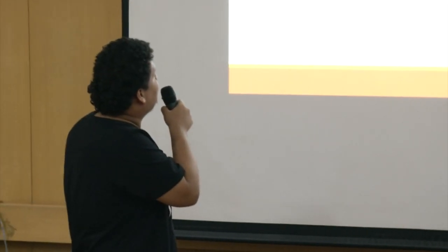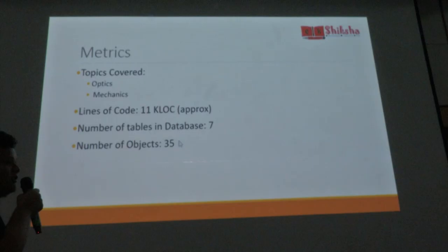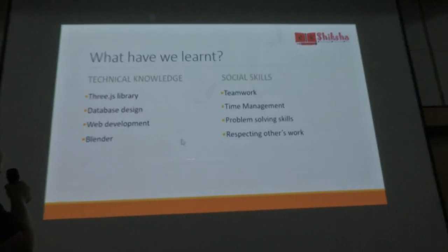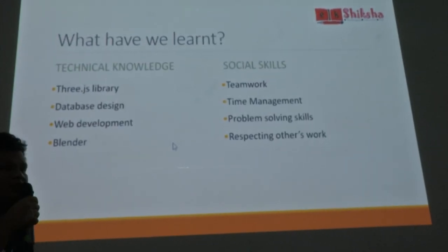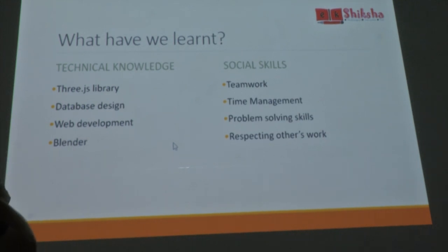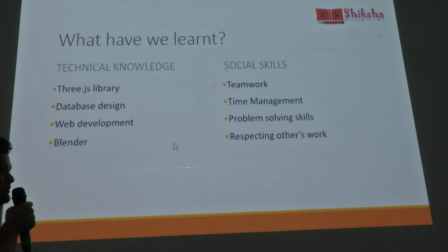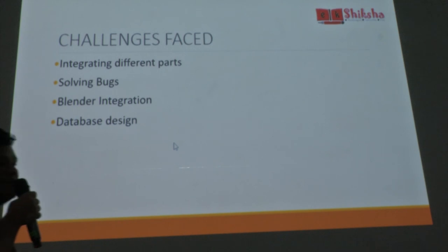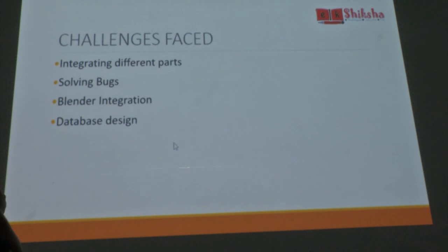Some metrics: we have covered two topics — Optics and Mechanics — with approximately 11,000 lines of code, 7 database tables, and 37 objects and counting. What we learned includes how to work as a team and technical skills such as the 3JS library, database design, web development, and Blender. Challenges included the integration part, solving bugs (still ongoing), Blender integration, and database design — since we had not taken a database design course before.